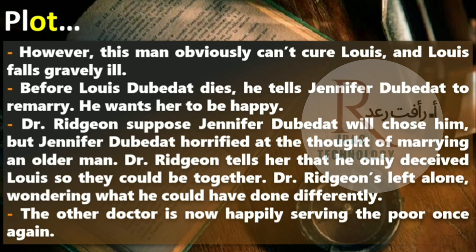Before Louis Dubedat dies, he tells Jennifer Dubedat to remarry, as he wants her to be happy. Doctor Ridgeon supposes Jennifer Dubedat will choose him. But Jennifer Dubedat is horrified at the thought of marrying an older man. Doctor Ridgeon tells her that he only let Louis die so they could be together. Doctor Ridgeon is left alone, wondering what he could have done differently.